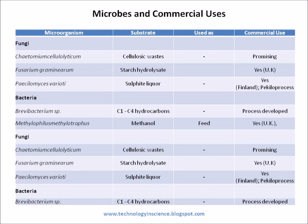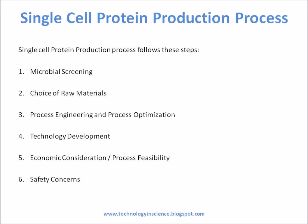Single-cell protein production process follows these steps: microbial screening, choice of raw materials, process engineering, process optimization and technology development, economic consideration, and safety concerns.